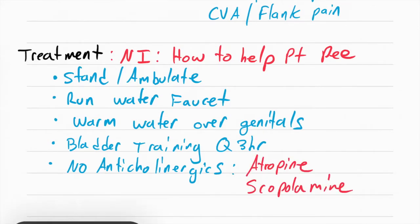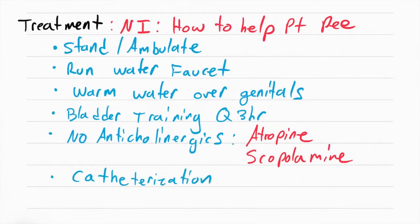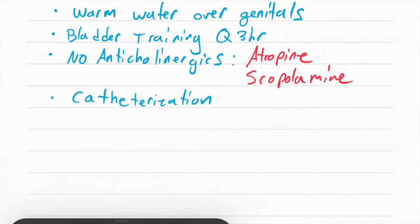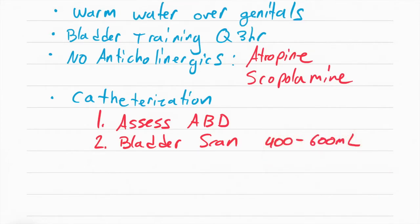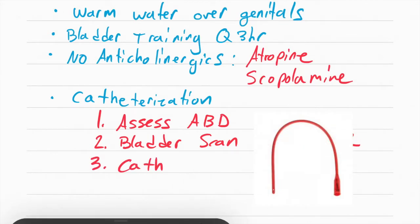Anticholinergics dry up secretions and they cause urinary retention, and the two meds you should know are atropine and scopolamine. The last thing we can do is catheterize the patient. Before we catheterize, there's some stuff that you have to do. The first step is assess the abdomen, touch the area where their bladder is and see if it's distended. Then we want to get a bladder scanner and scan their bladder to see how much urine there is. There's usually going to be 400 to 600 mL of urine in there, but there could be more. The last step is to actually catheterize them.